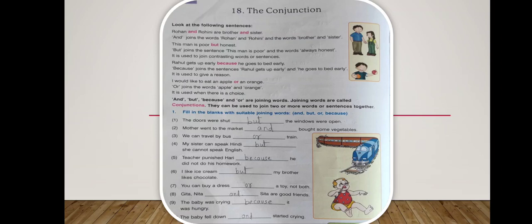Here are the fill in the blanks with suitable joining words: and, but, or, because. First one: the doors were shut but the windows were open. Mother went to the market and bought some vegetables. We can travel by train or bus. My sister can speak Hindi but cannot speak English.